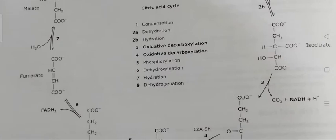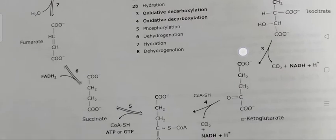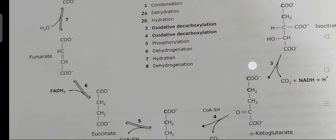In step 6, the third oxidation step in the cycle, FAD removes two hydrogen atoms from succinate. The enzyme catalyzing this step is succinate dehydrogenase, which forms fumarate.